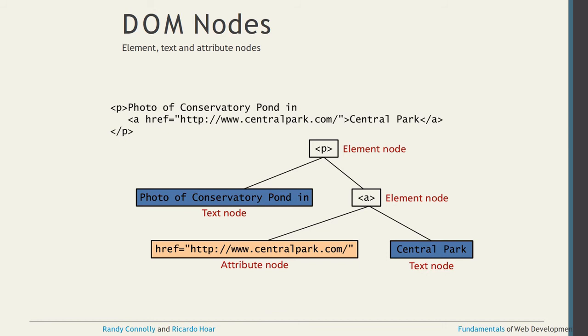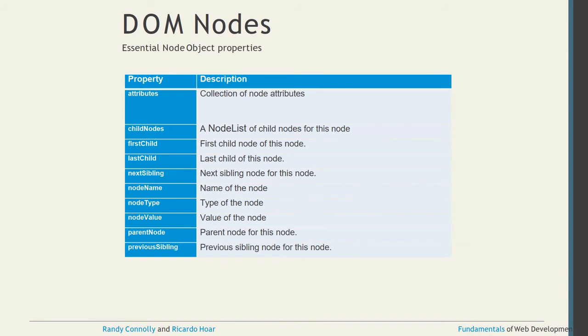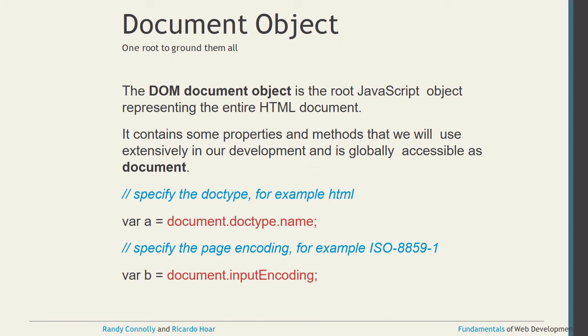DOM node object properties — important for examination: 'attributes' is the collection of node attributes; 'childNodes' is a node list of child nodes; 'firstChild' is the first child node; 'lastChild' is the last child node; 'nextSibling', 'nodeName', 'nodeType', 'nodeValue', 'parentNode', and 'previousSibling'. After looking at the tree structure, we can identify all these object properties of DOM nodes.